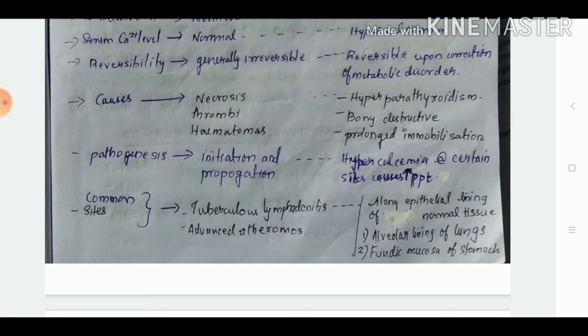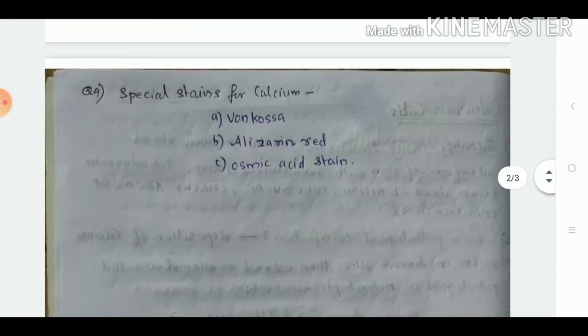For metastatic calcification, common sites are along the epithelial lining of normal tissues like alveolar lining of the lungs and fundic mucosa of stomach. Special stains are used for calcium.